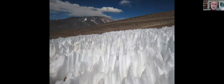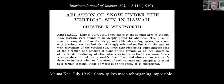These penitents are beautiful, however they can cause difficulty. For example, if you're trying to climb Aconcagua, you'll be cursing at the penitents for slowing your progress. From a 1939 paper, Chester Wentworth complained that on Mauna Kea in Hawaii, snow spikes made tobogganing impossible.